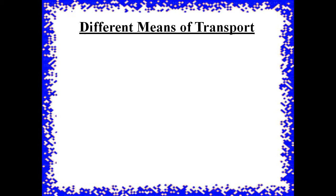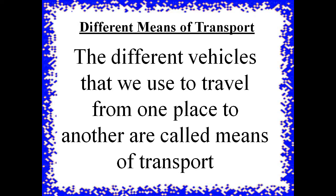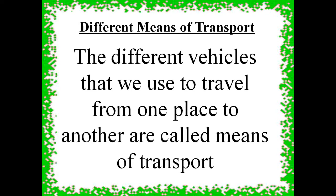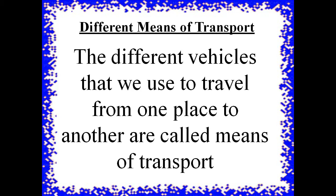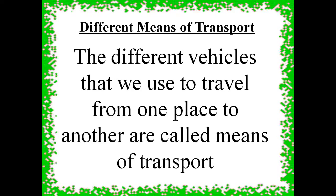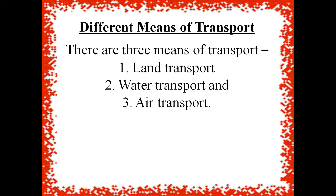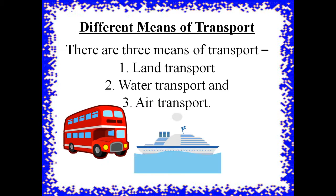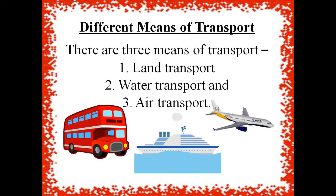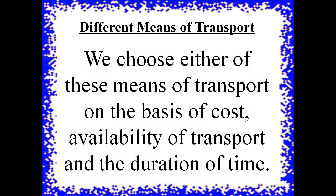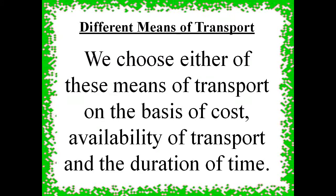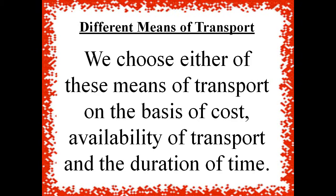Different means of transport. The different vehicles that we use to travel from one place to another are called means of transport. There are three means of transport: land transport, water transport, and air transport. We choose either of these means of transport on the basis of cost, availability of transport, and the duration of time.